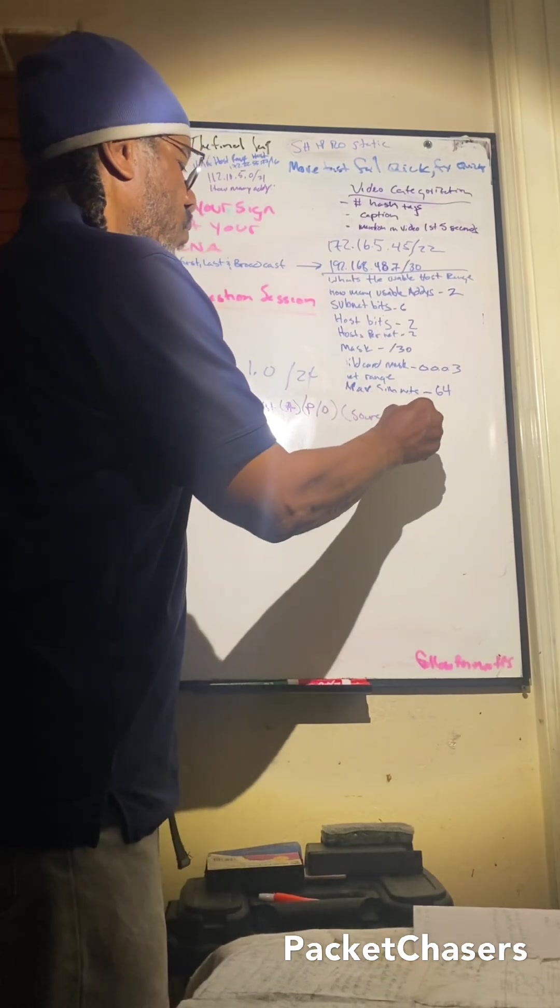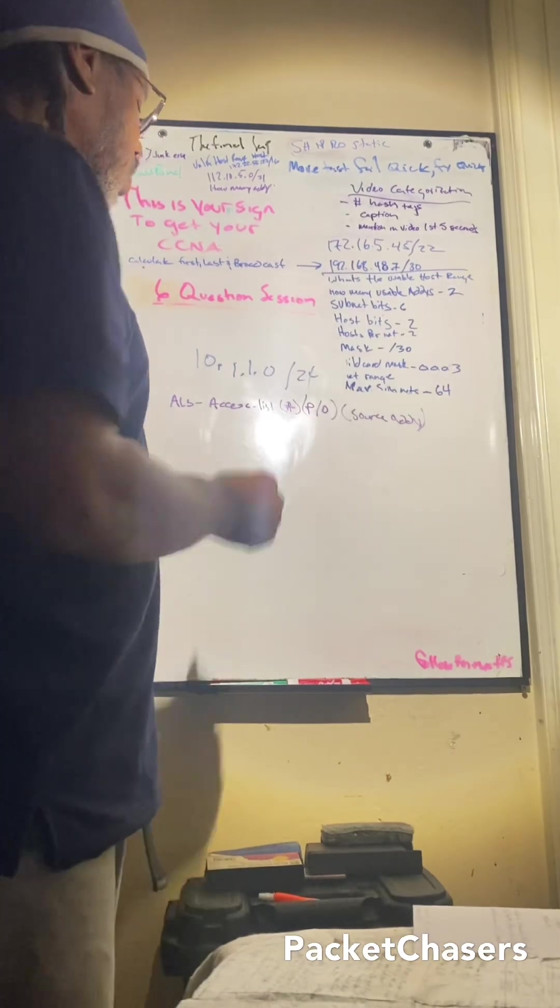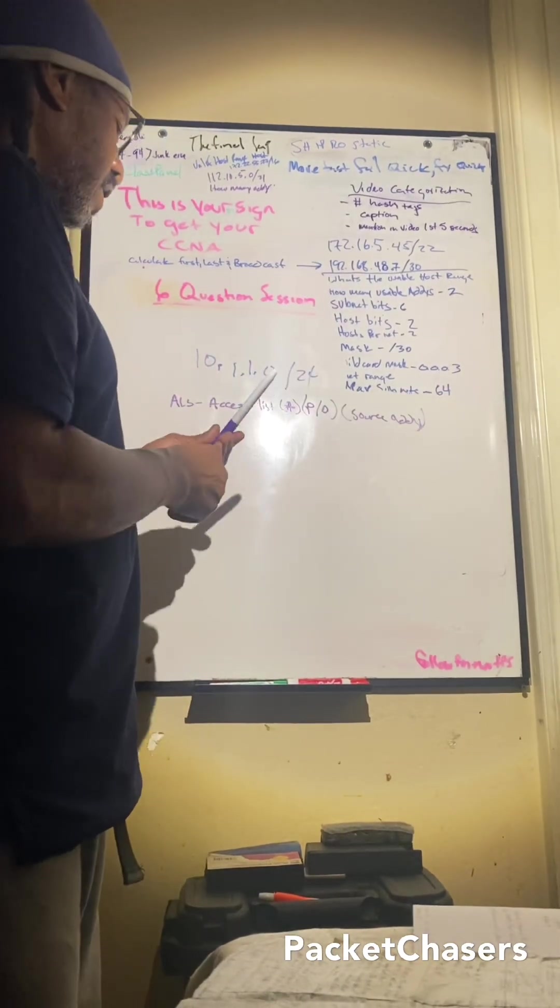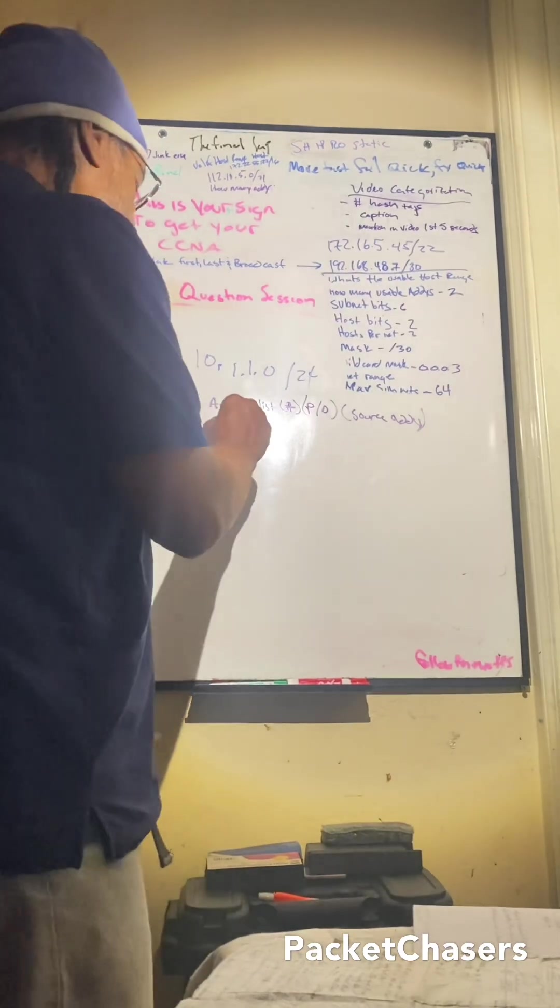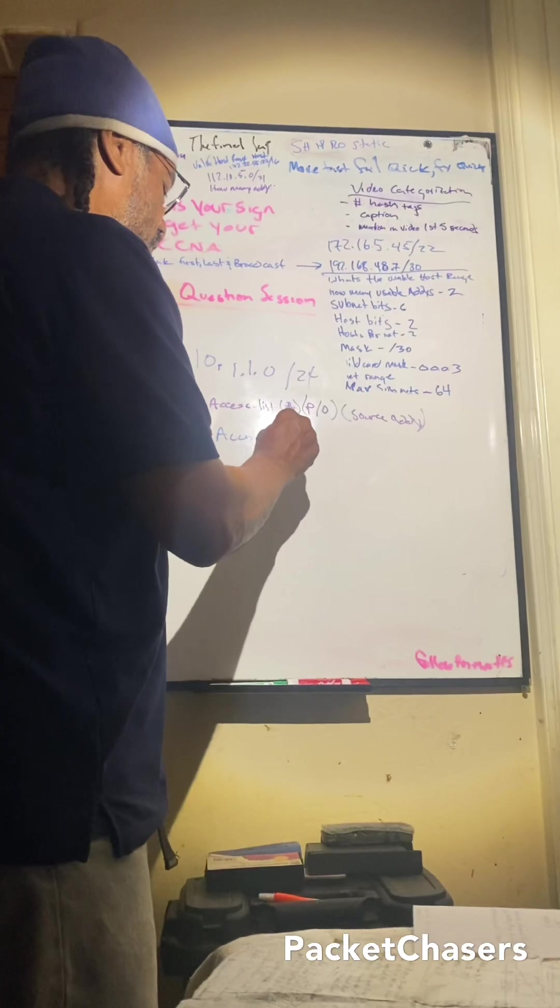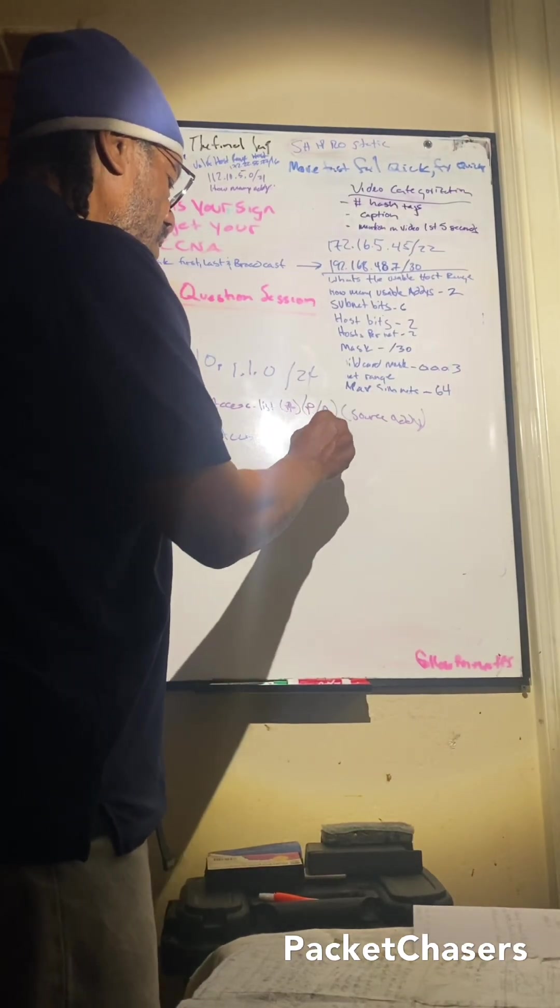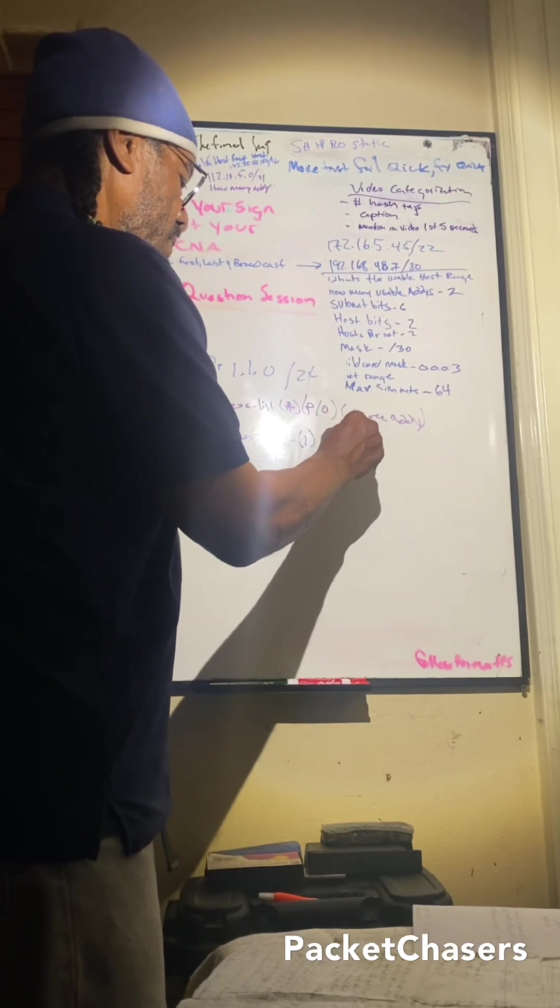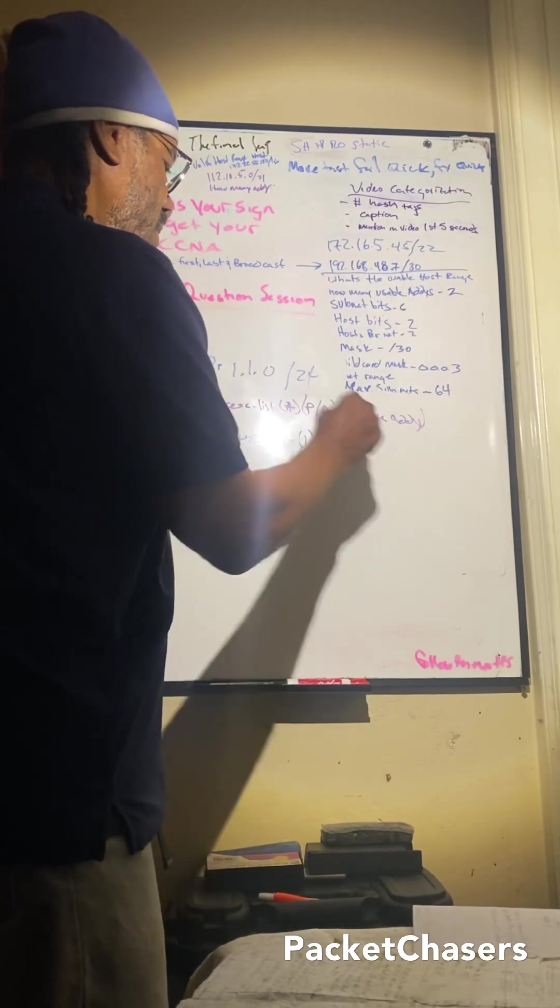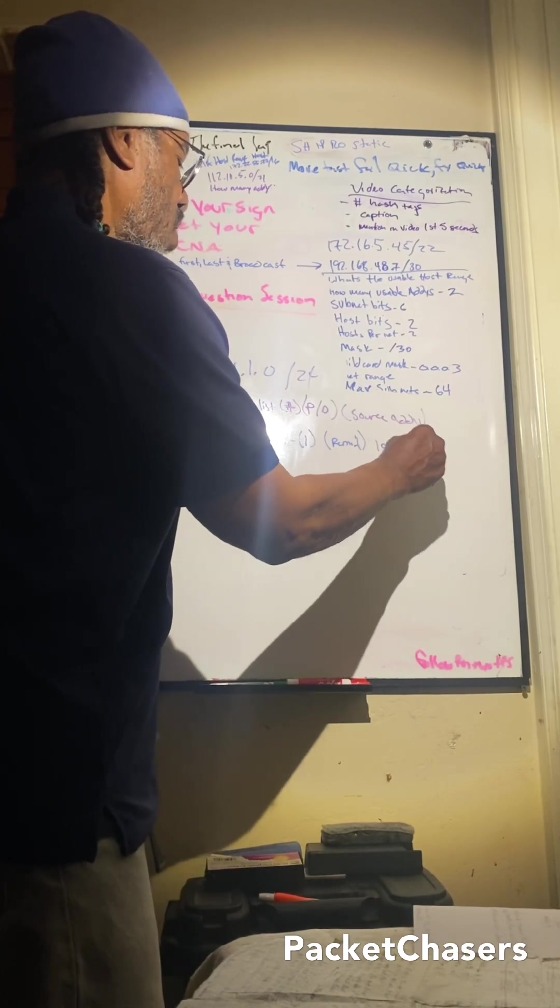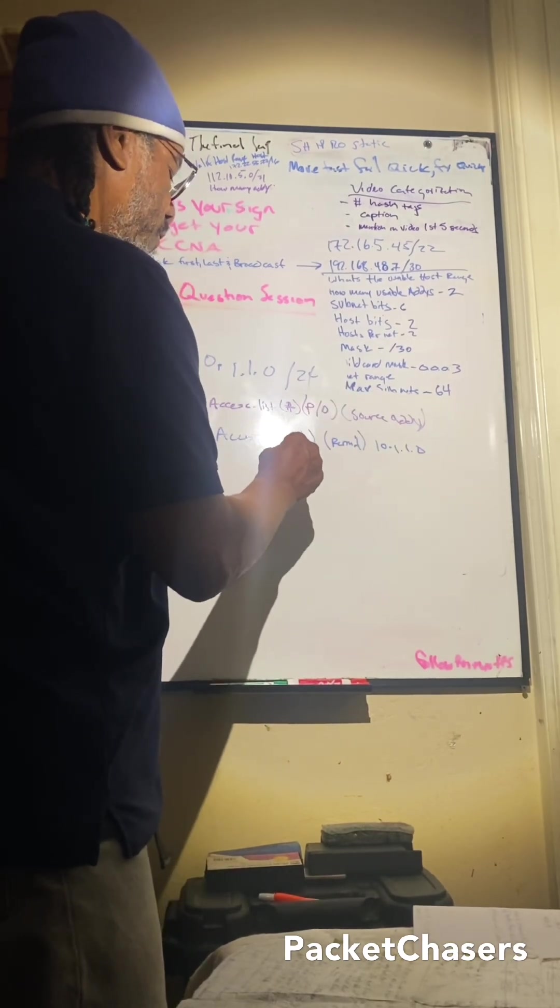Alright, we memorize this as a tool to help us in a situation like this. So the correct answer we're gonna say is gonna be access-list number one, permit 10.1.1.0. This is a /24.